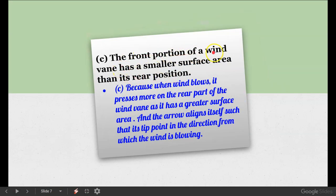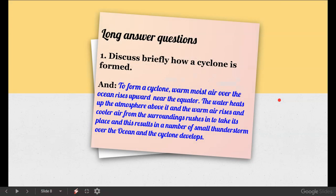See, the front portion of wind vane has a smaller surface area than its rear position because when wind blows, it presses more on the rear part of the wind vane as it has a greater surface area. And the arrow aligns itself such that its tip points in the direction from which the wind is blowing.